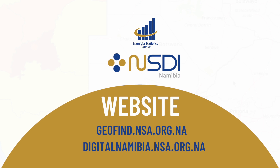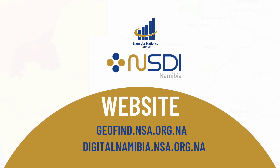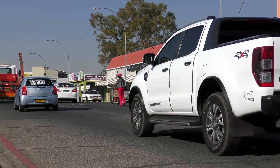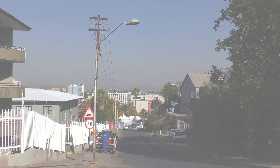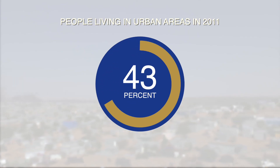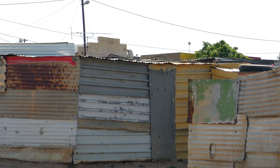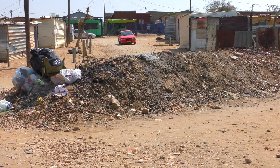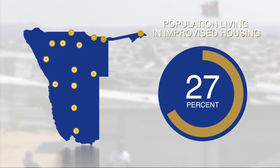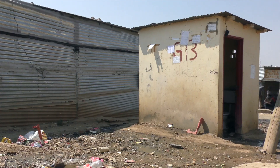These platforms can be accessed by researchers, government and other stakeholders to make informed decisions and carry out targeted interventions. For example, according to the Namibia 2011 population and housing census report produced by the NSA, the percentage of Namibians living in urban areas increased from 33% in 2001 to 43% in 2011. As more people move to urban areas, informal settlements grow and expand. According to the 2011 population and housing census main report, 27.2% of the urban population in Namibia live in improvised housing units.